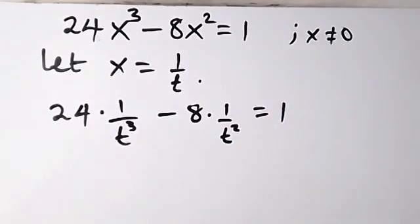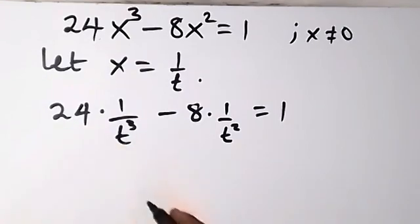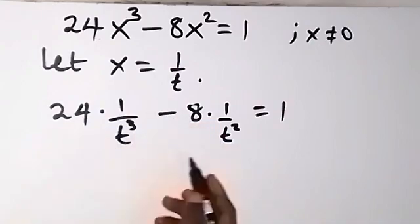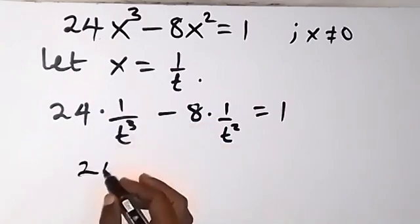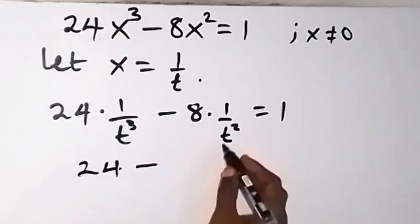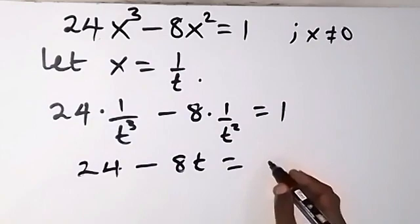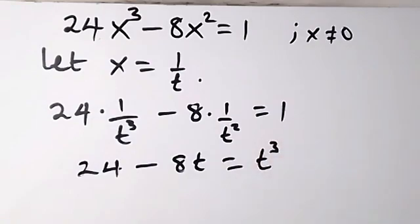Now let's remove the fraction by multiplying through by t raised to power 3. So t raised to power 3 multiplied through leaves us with 24, then minus 8t on that side, and on the other side we get t raised to power 3.